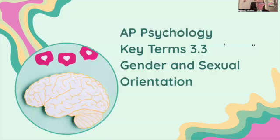Hi everyone, welcome back to Learn With Me. I'm Debra Hansen and today we're going to be looking at AP Psychology Key Terms for 3.3 Gender and Sexual Orientation. This is simply the definitions and real life examples that go with this section of Unit 3.